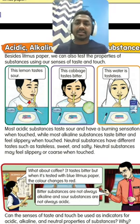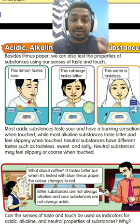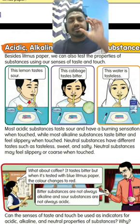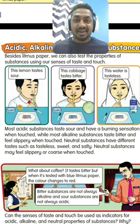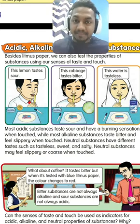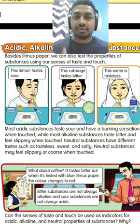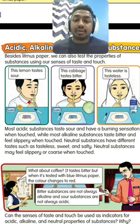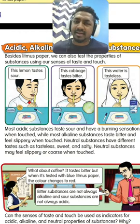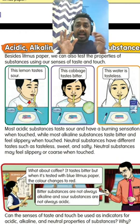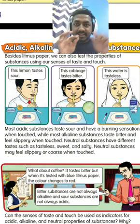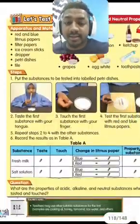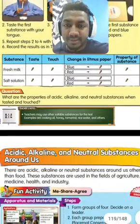Neutral substances can have different tastes — tasteless like water, sweet like sugar solution, or salty like salt water. Neutral substances may feel slippery or coarse when touched. For example, sugar and salt feel coarse when you touch them.